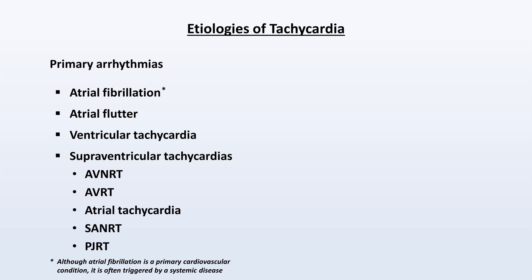The details of each are far outside the scope of this video, but in almost all of these, the rate is being set by something outside of the sinus node — that is, outside the heart's normal intrinsic pacemaker. Etiologies within systemic diseases all share in common that the rhythm is still originating from the sinus node and still under some degree of control by the body's autonomic nervous system, but the autonomic nervous system is telling the sinus node to fire electrical impulses more quickly than normal. We call this type of tachycardia sinus tachycardia.